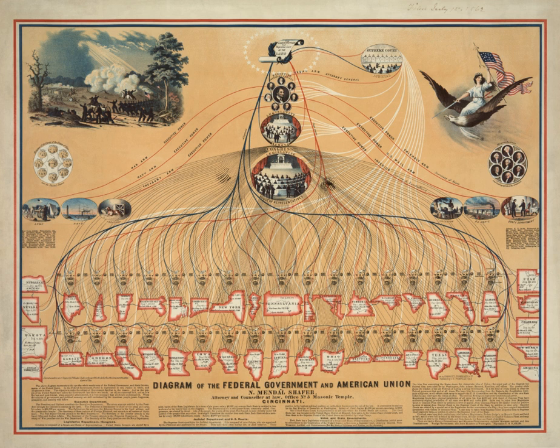In addition to the 435 voting members, there are six non-voting members, consisting of five delegates and one resident commissioner. There is one delegate each from the District of Columbia, Guam, the Virgin Islands, American Samoa, and the Commonwealth of the Northern Mariana Islands, and the resident commissioner from Puerto Rico.